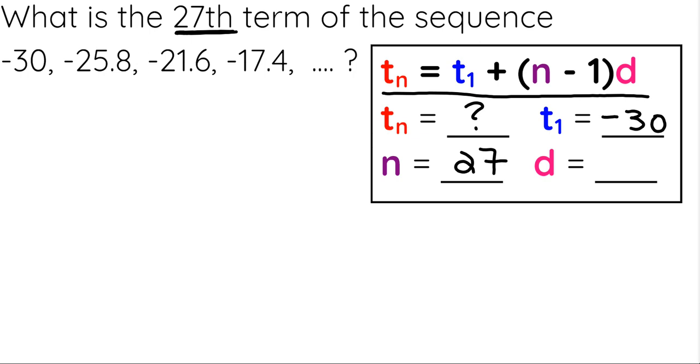To find the difference, you take any term at all and subtract it from the term right in front of it. So for the difference, I could take the second term minus the first term, or I could do the third term minus the second term, etc. So let's just go with the second term, t2, and subtract the first term.